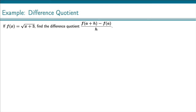If f of x equals the square root of x plus 3, find the difference quotient: f of a plus h minus f of a, over h. We will start by finding what f of a plus h is. That means we plug in a plus h everywhere we see x. For this function it's straightforward — we just have the one x, so we replace that with a plus h and then plus 3.